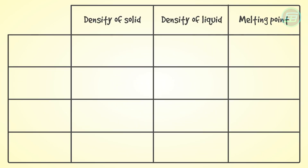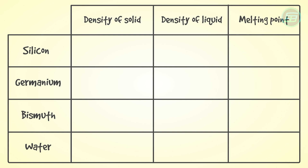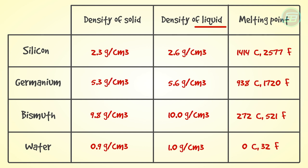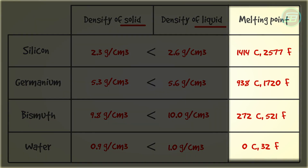But there are some exceptions. Some solids such as silicon, germanium, bismuth, and ice are less dense than their liquids. But this is never seen in nature except for water, because the melting points are too high.